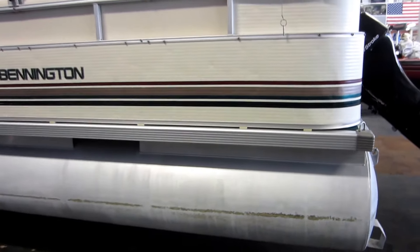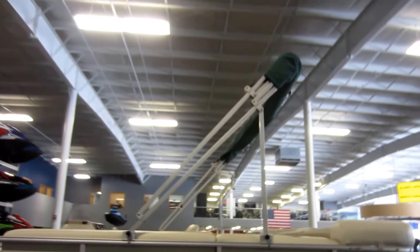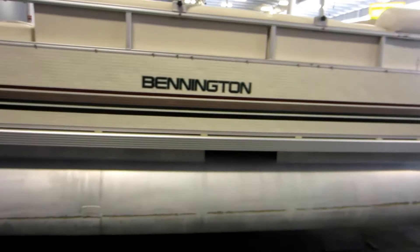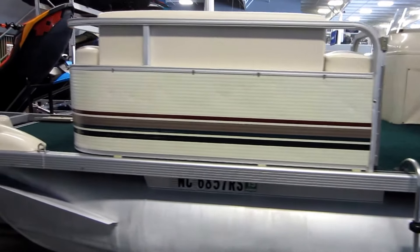This boat also comes with a snap on mooring cover, bimini top with storage boot, four mooring loops, and a 6.6 gallon fuel tank.